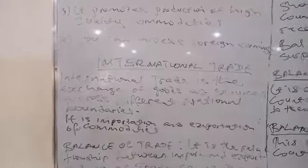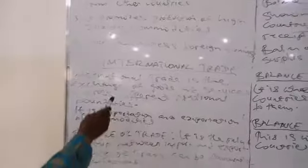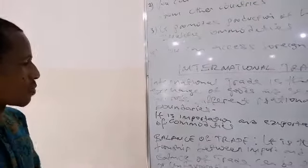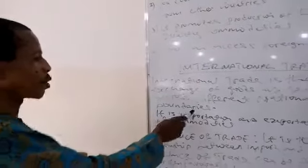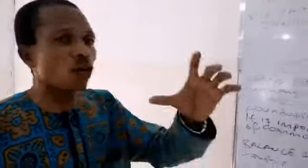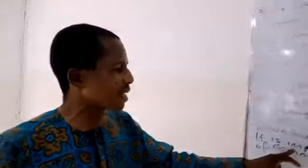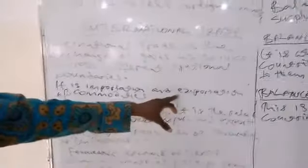Let's look at international trade. International trade is also related to international marketing as we have discussed before. This is the trade and exchange of goods and services across different national boundaries. It is the actual selling of the commodities abroad, and it has to do with importation and exportation. Importation is when you are moving products from other countries to your own domestic country, while exportation is when you are selling from your country to other countries abroad.